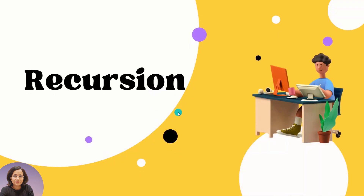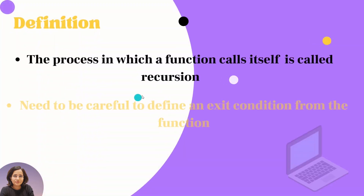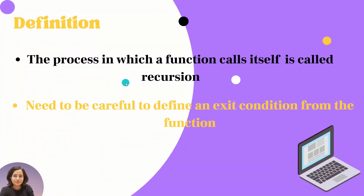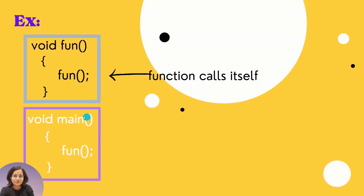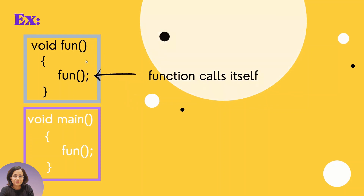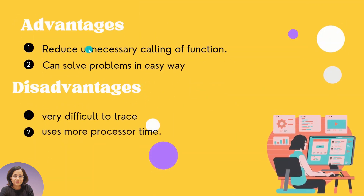Welcome back to the module on functions. In this video I will be explaining recursion and implementing it using a program. Recursion is a process in which a function calls itself. We need to be careful to define an exit condition. Here you can see in the user-defined function, the same function is being called again — that is recursion.